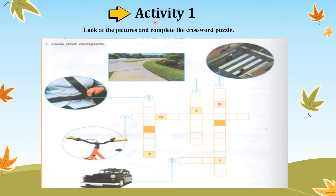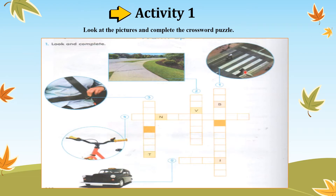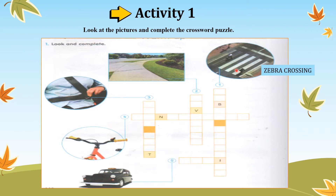Let's do activity 1. Look at the pictures and complete the crossword puzzle. As you know, we have learned this in our previous lesson, so I hope you still can remember. Let's look at picture number 1. What is the answer for this picture? What is the function of this thing? We use this to cross the road. Well done! This is a zebra crossing. We need to cross the road at the zebra crossing.